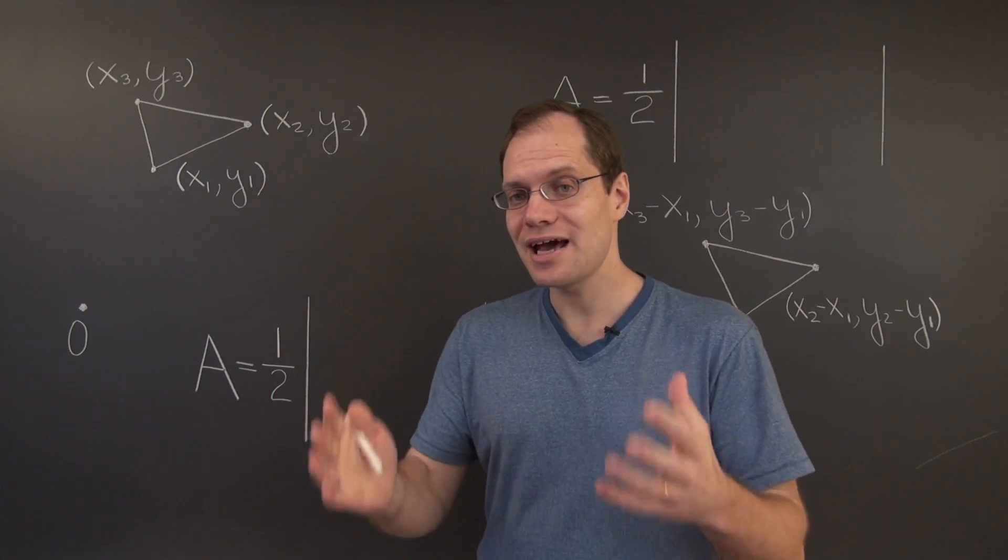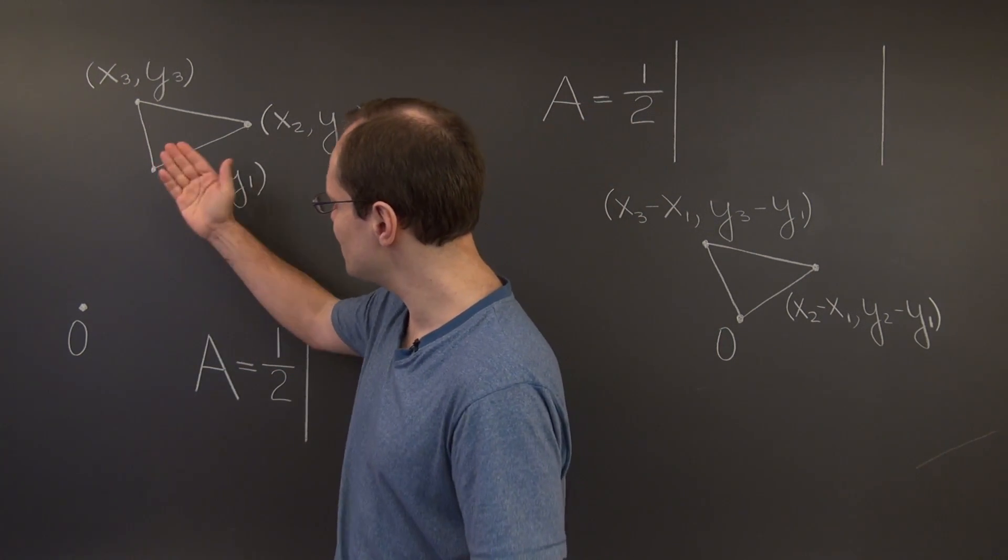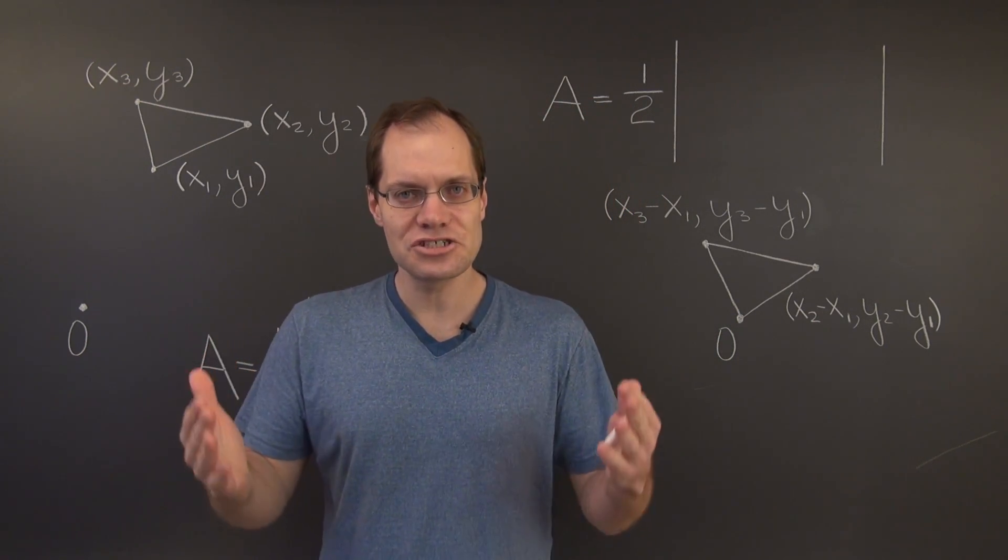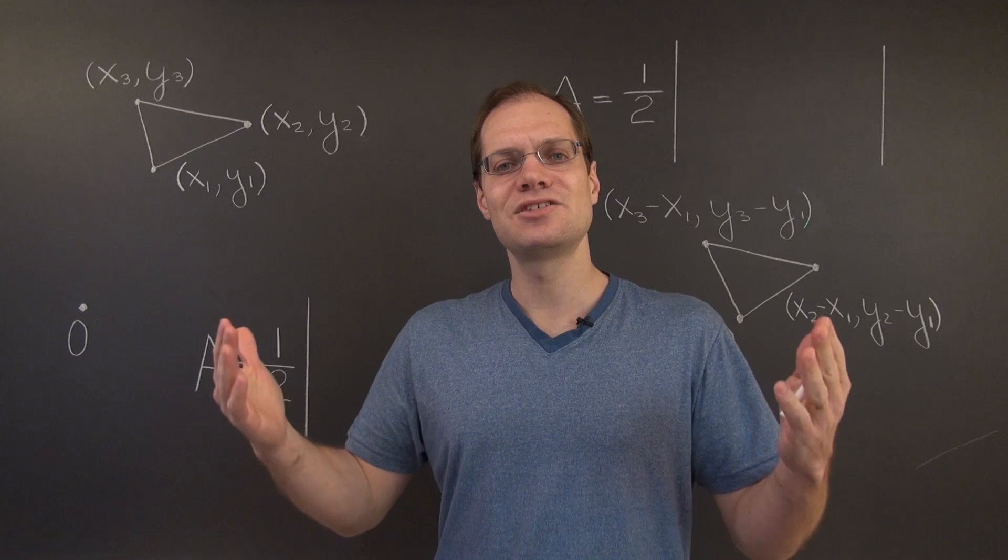And we know how to calculate areas of triangles given by vectors, but only if one of the vertices, let's say this one, is at the origin. And the triangle is essentially given by two vectors coming from the origin, representing its two sides.